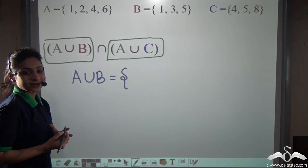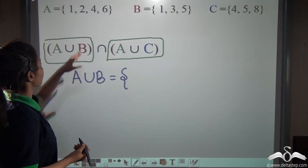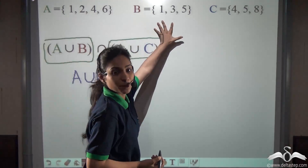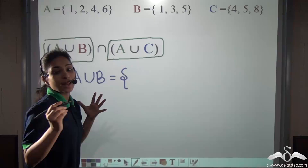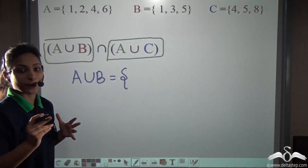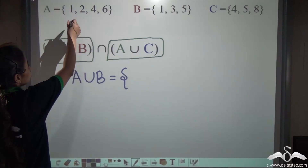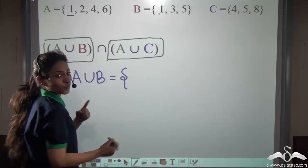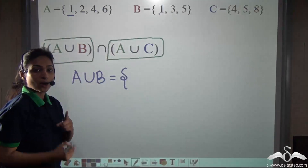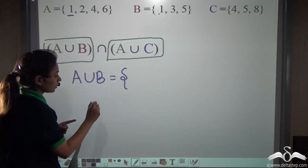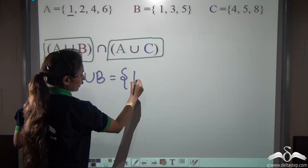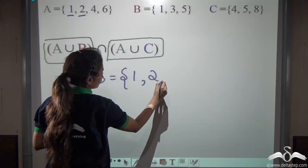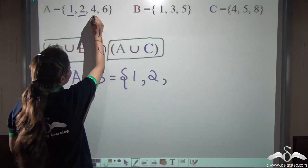What will we get as A union B? Writing all the elements of A as well as B, but the elements should be distinct, not repeated. So: 1 is present in both, we write it once; then 2, 4, 6 from A.